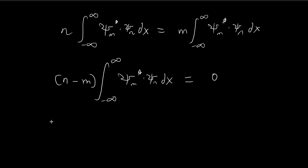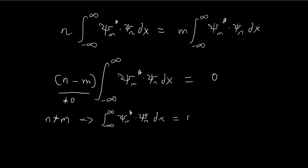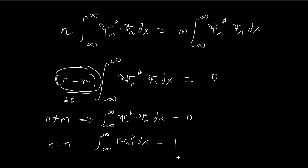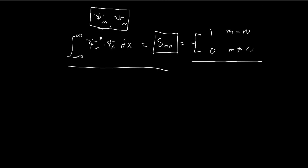So there are two possibilities. If n is not equal to m, then obviously (n minus m) is not equal to zero, so in order for the whole thing to equal zero, it must be the case that the integral itself is equal to zero. This is exactly what we wanted to prove: if m is not equal to n, these are orthogonal to each other, so the integral is equal to zero. And if n is equal to m, this expression (n minus m) is zero, so the equality is trivially satisfied. In that case, the integral — since m equals n — is just the normalization integral, which equals one. So we've essentially proved the claim: if n equals m the integral equals one, and if n does not equal m the answer is zero.